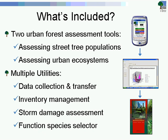What's included with iTree? iTree is not a single application but a collection of tools revolving around two main urban forest assessment applications — one focusing on street tree populations exclusively, and one used when assessing the resource at the ecosystem level, meaning all trees that comprise the urban forest. These are not intended to be day-to-day inventory management tools, but rather give you a snapshot in time of structure, function, value, and management needs. Beyond these two applications, there are utilities that provide added efficiency, such as data collection tools, and added functionality, such as the storm damage assessment protocol.